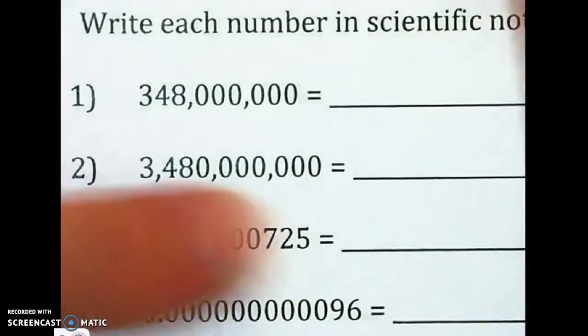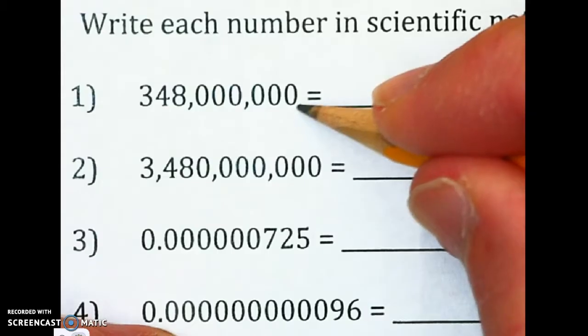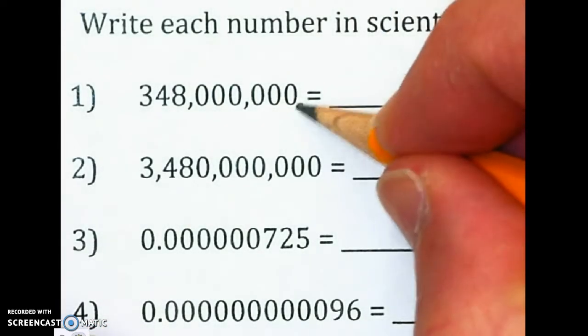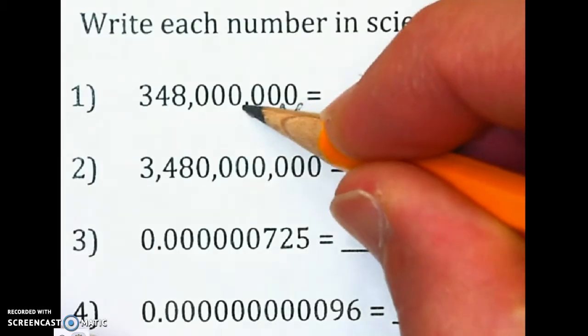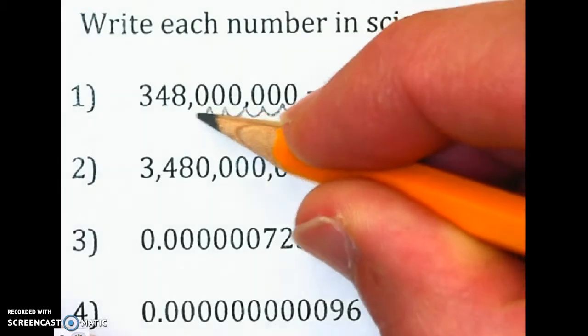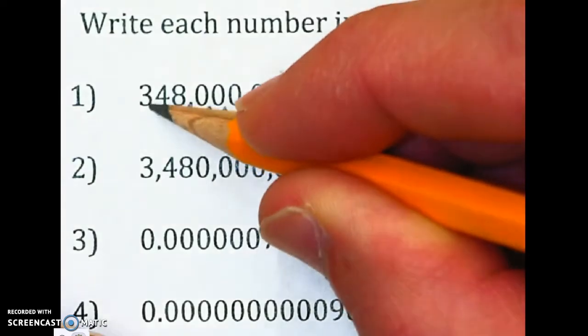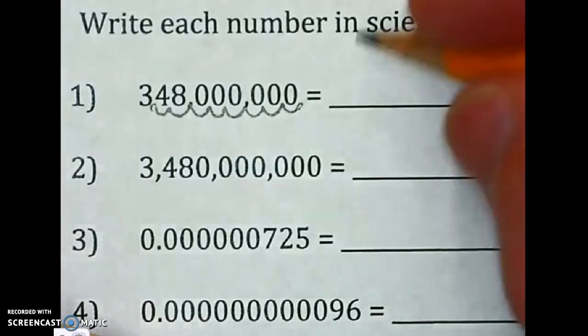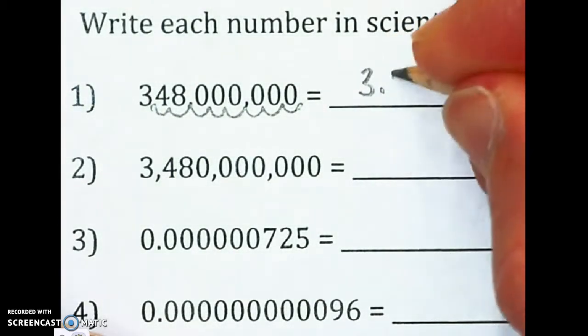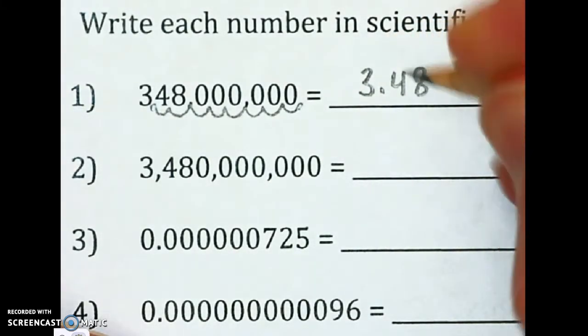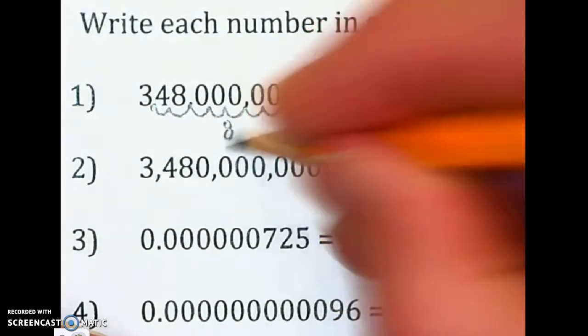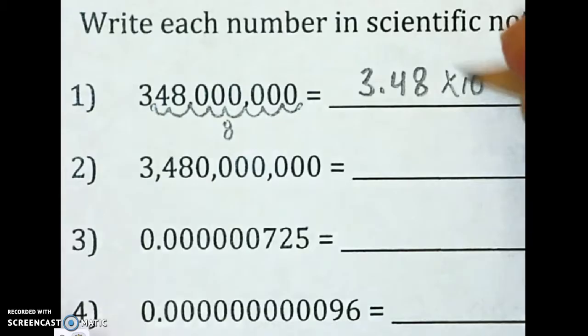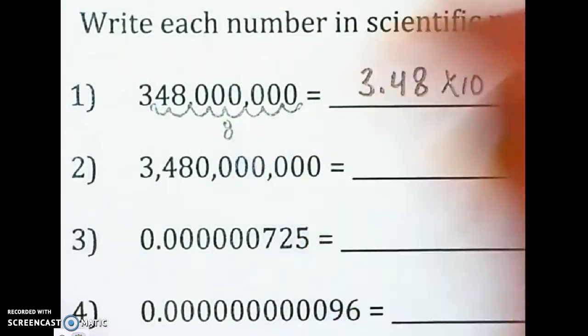So I'm going to move my decimal. You don't know where that's at. It's hidden behind the last number there, that last zero. I'm going to move it the number of spaces it needs to go. So one, two, three, four, five, six, seven, eight. The decimal goes right up behind the last number. So now I have 3.48. I should have wrote a little eight right here to remember my spaces. Times 10. And the number of spaces I moved the decimal is now my power.